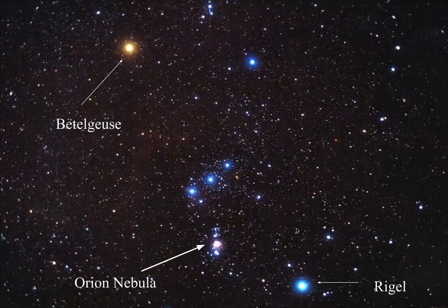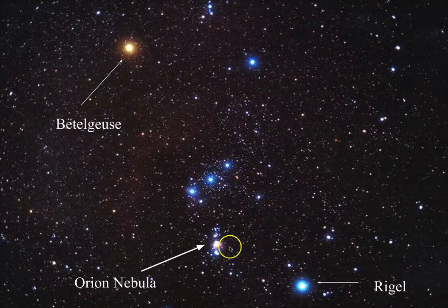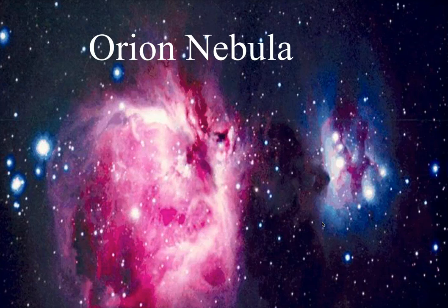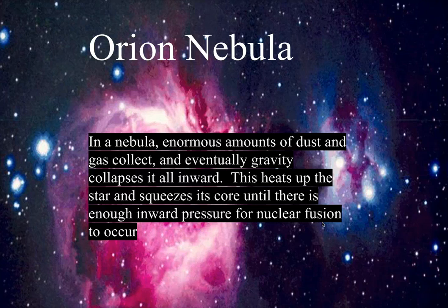In the famous constellation Orion, there is the Orion Nebula — a big, enormous cloud of largely hydrogen gas where stars are actually born. In a nebula, enormous amounts of dust and gas collect, and eventually gravity collapses it all inward. This gravity pushing inward heats up the material and squeezes the core until there is enough pressure for nuclear fusion to occur — for hydrogen atoms to fuse into helium. Once that reaction starts, the star is born, literally.